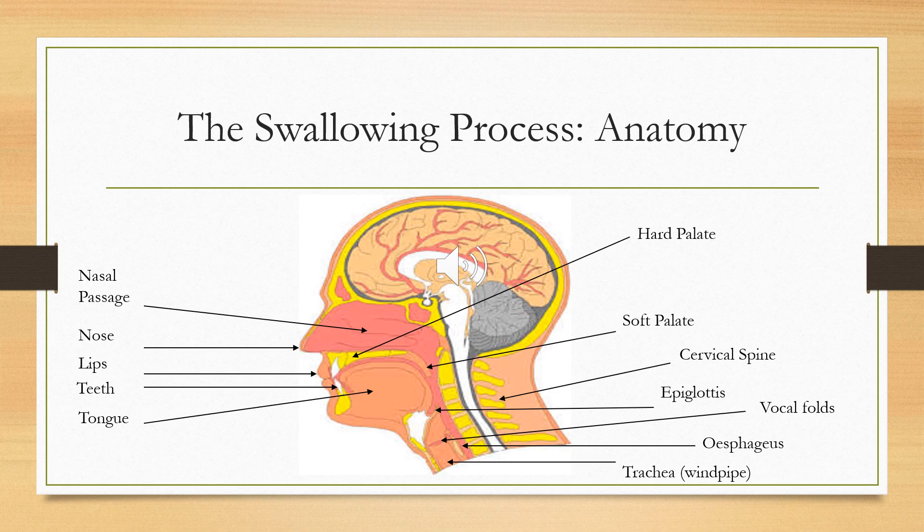First we're going to take a look at the anatomy, just so you know where everything is during the process of the swallow. Starting on the left side of the page, we have the nasal passage — that's the inside of your nose. Then we have the outer part of your nose, the lips, and then the teeth behind the lips. Generally we'd have canines, incisors, molars, premolars, but oftentimes we will see missing teeth, no teeth, false teeth or dentures. Then we have the tongue, which stretches from the front of your mouth all the way to the back — that's described as being in the oral cavity.